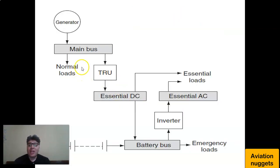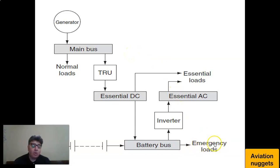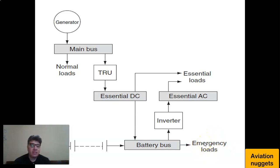In any aircraft we have normal loads supplied by the main bus, essential loads supplied by the essential AC and DC bus, and emergency loads supplied by the battery bus. There is a hierarchy: emergency loads are more important than essential loads, and essential loads are more important than normal loads. Emergency loads are needed for safe landing, essential loads for continuous safe flight, while normal loads do not affect safe operation.